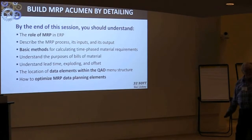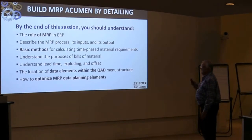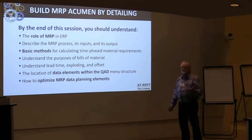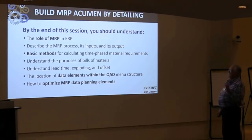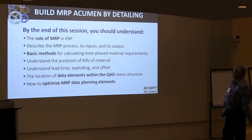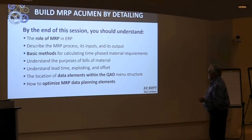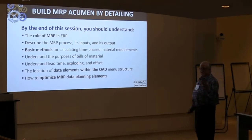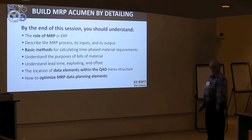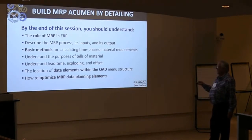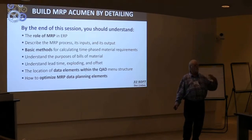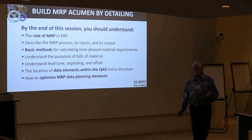We'll describe the MRP process — the inputs and the outputs. We'll go through the actual MRP grid and look at how MRP calculates. We'll understand how bills of material play into MRP, lead time offset exposures, and the location of those data elements within the MRP planning structure in 1.4.1, 1.4.7, and 1.4.17. We'll also look at how to optimize those planning elements — EOQ, minimum order quantity, lead times.